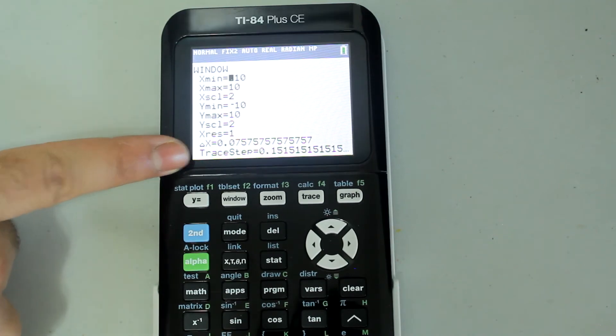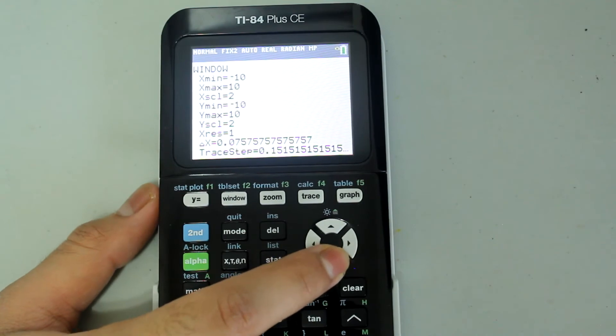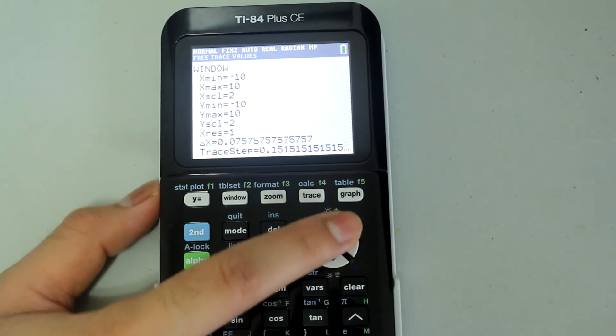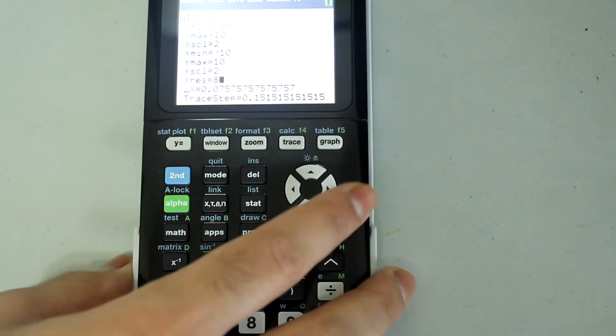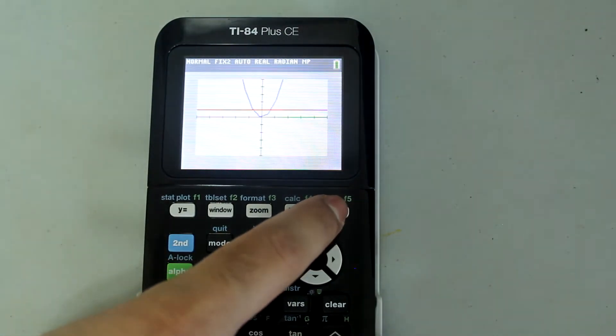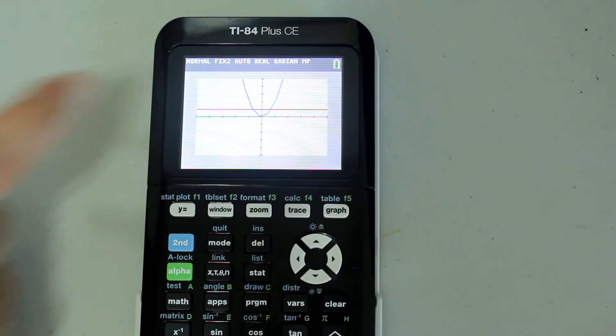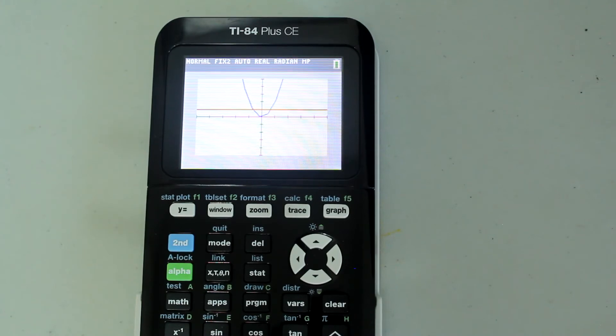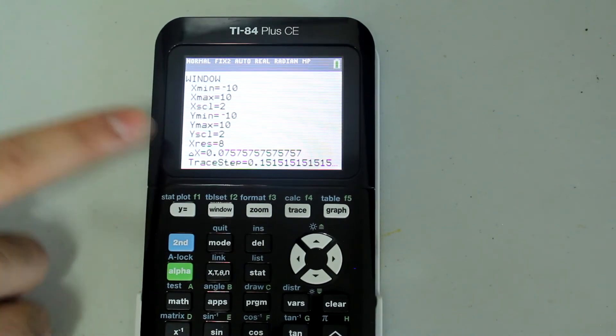Next, we have the x res option, which determines the resolution of the graph. Now, x res equals to 1. If I change it to 8, which is as high as you can set the x res value to, notice what happens to the graph. It's much more jagged if you can't tell. It's not as smooth as it was before. The calculator is evaluating and graphing the function at every 8th pixel. You probably want to leave that at 1.